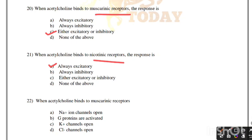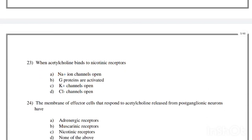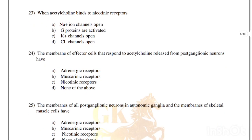When acetylcholine binds to muscarinic receptors: sodium ion channels open, G proteins are activated, potassium channels open, or chloride channels open. Correct answer is option B, G proteins are activated. When acetylcholine binds to nicotinic receptors, sodium ion channels open — that is the distinction from muscarinic receptors.